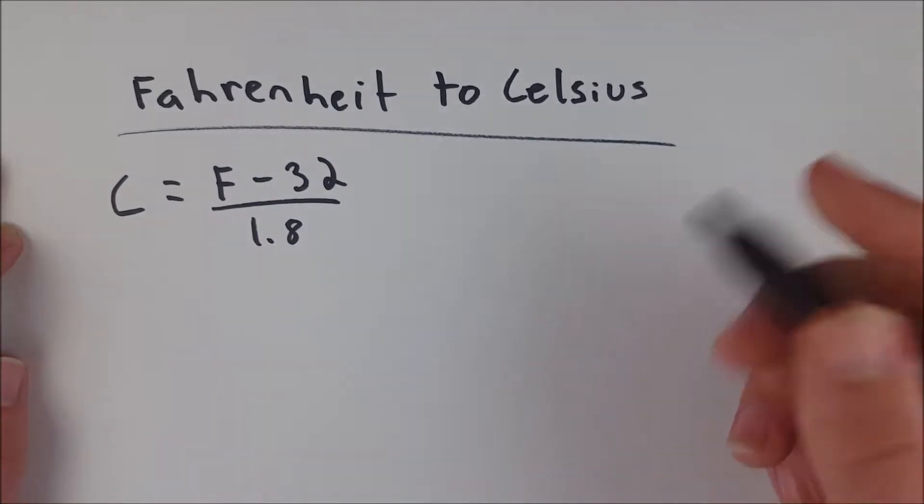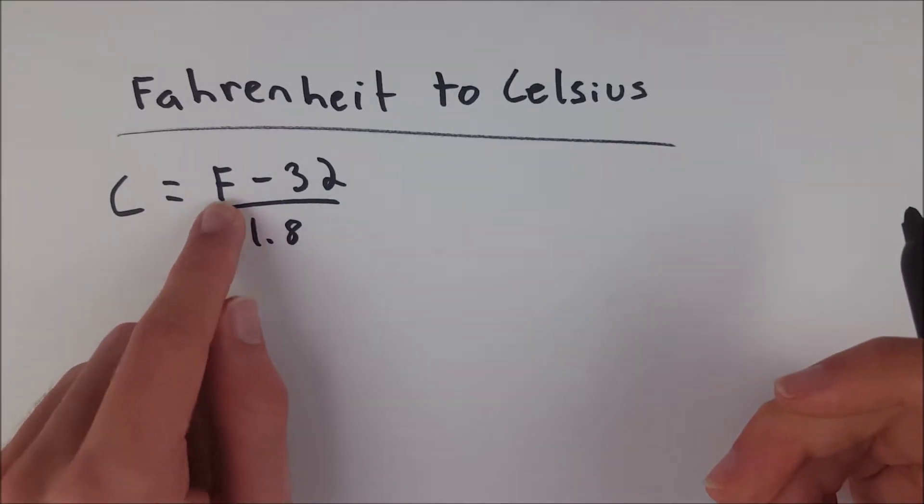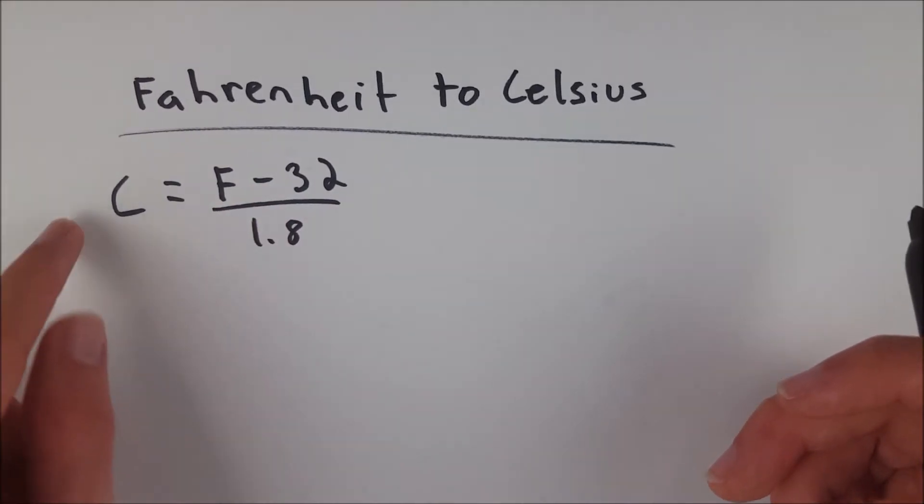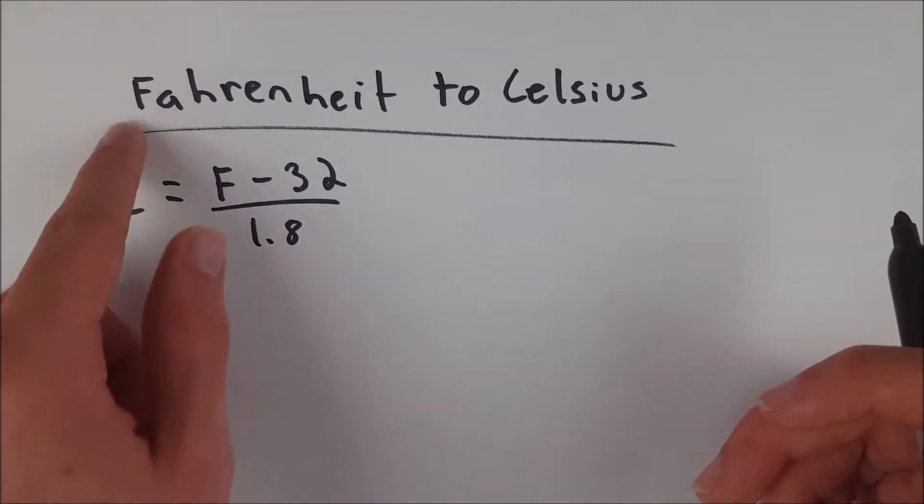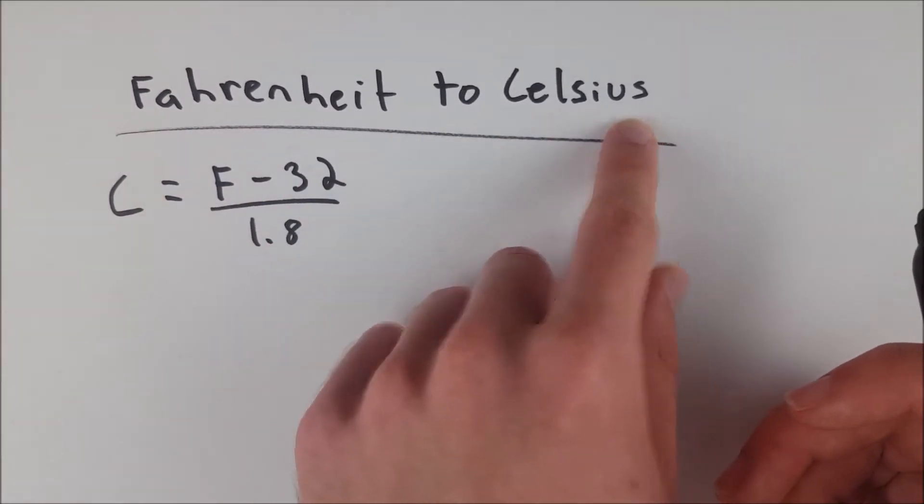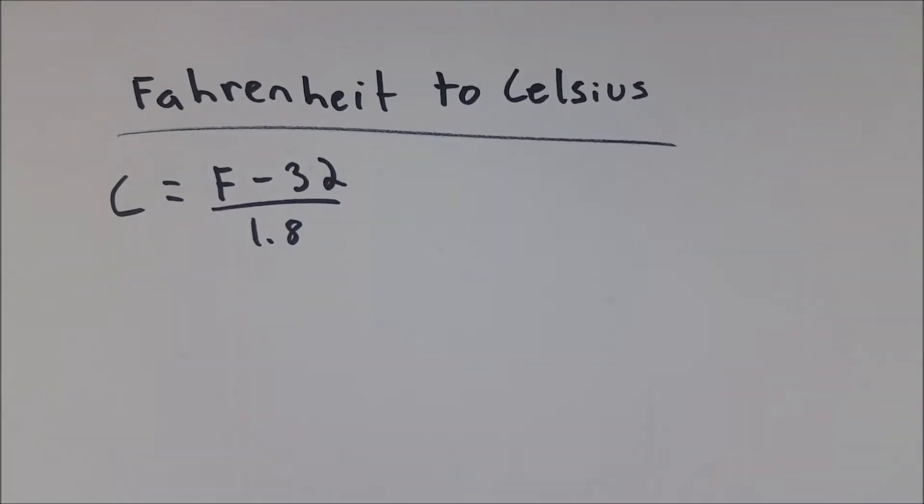So of course you can see if we had 32 as our value in Fahrenheit, which is the freezing temperature, 32 minus 32 is zero. Zero divided by 1.8 is zero, and we see that 32 degrees Fahrenheit becomes zero degrees Celsius.